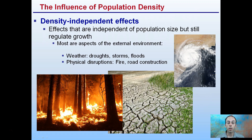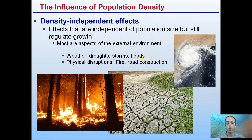We have two main ways to influence this. We have density-independent effects — these are effects that are independent of the population size, but still regulate growth. Most of these are aspects of the external environment, such as weather-related events like droughts, storms, and floods, or also physical disruptions such as fire and road construction.